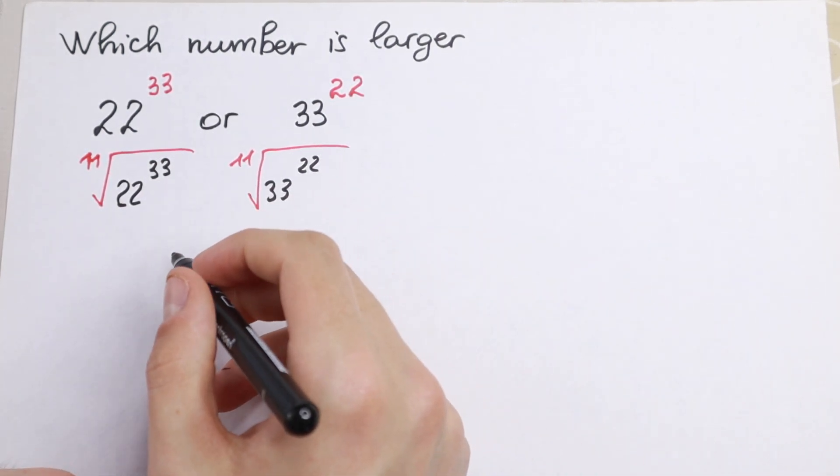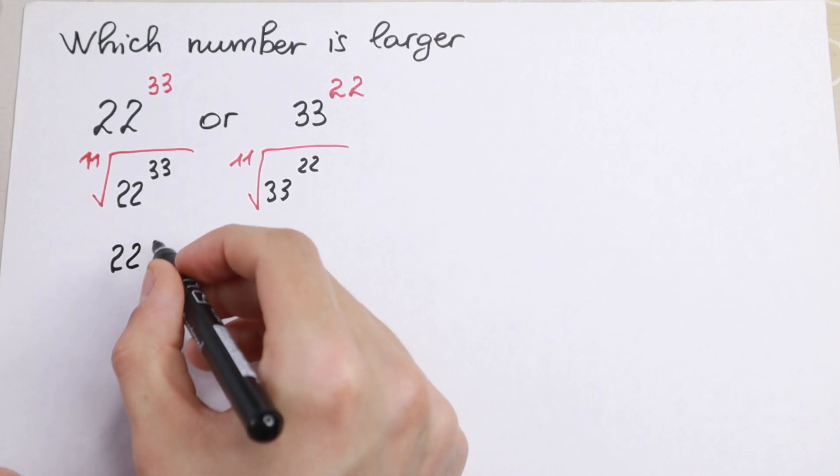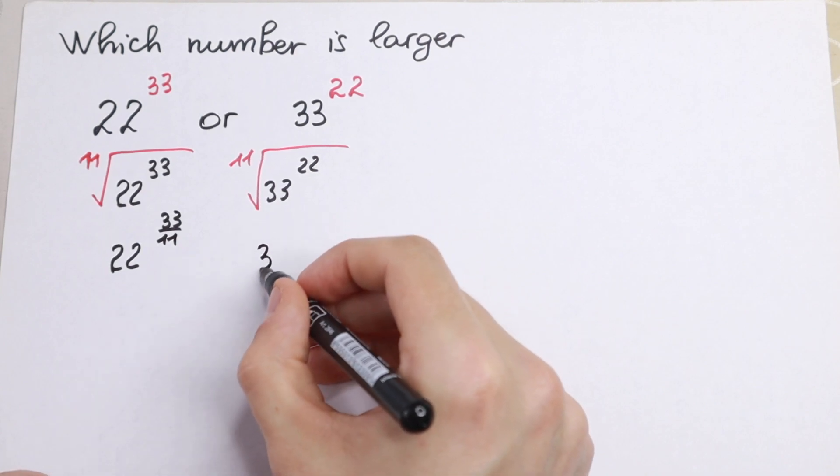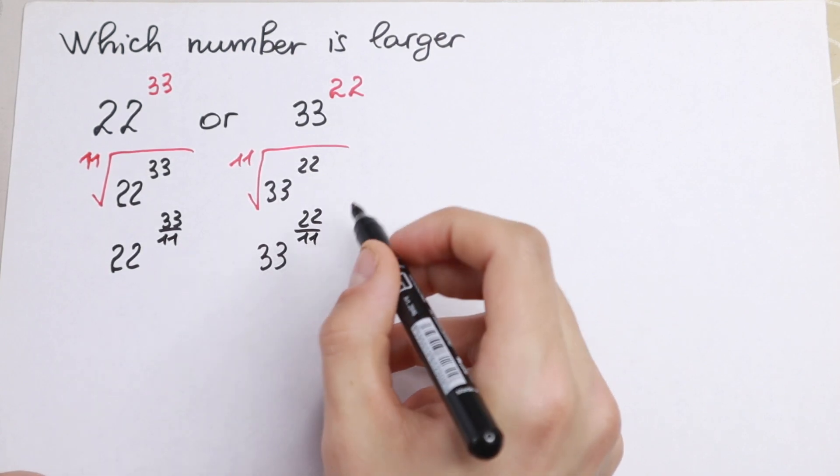Take a look at what we will have: 22 to the power 33 over 11 and of course 33 to the power 22 over 11.